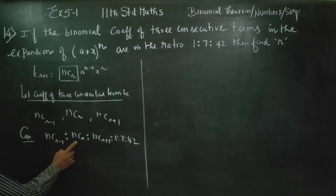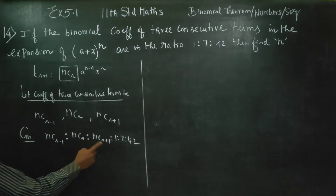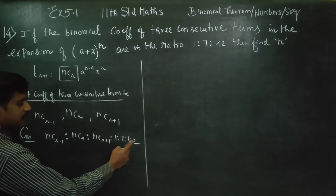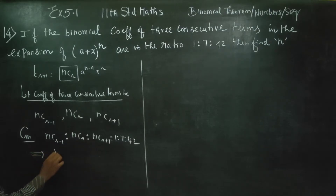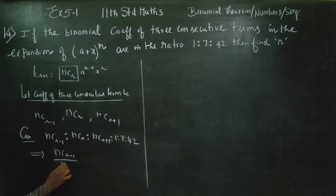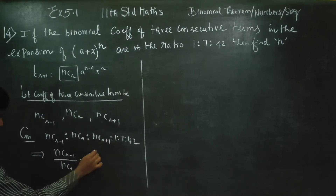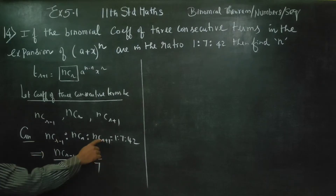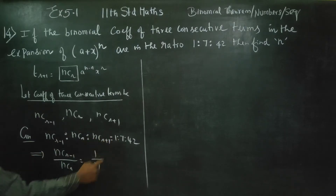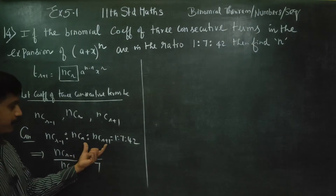Taking the first two terms, we use the ratio 1:7. Taking the next two terms, we use 7:42. For the first ratio, first term divided by second term gives nC(r-1) divided by nCr is equal to 1 by 7.